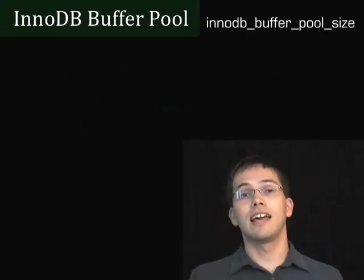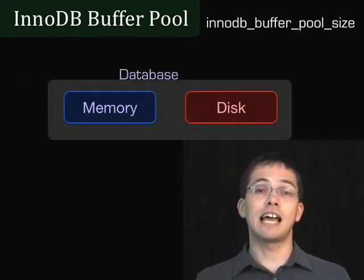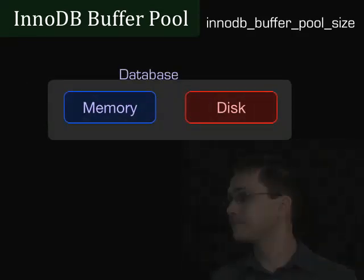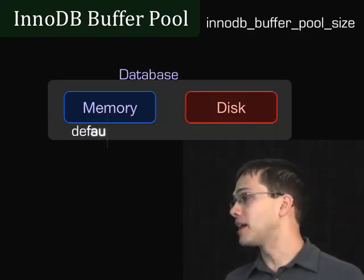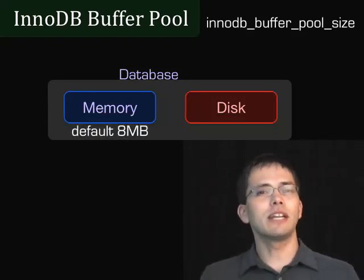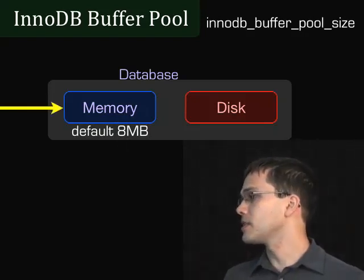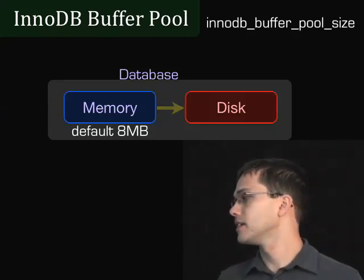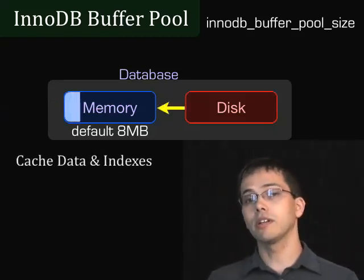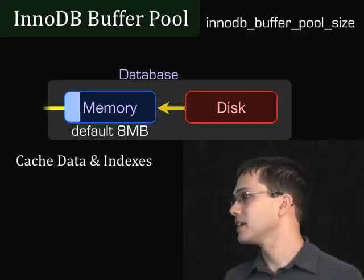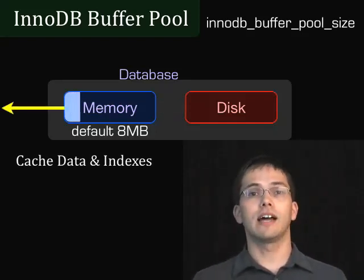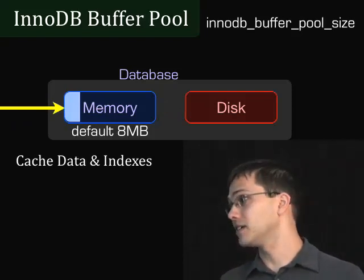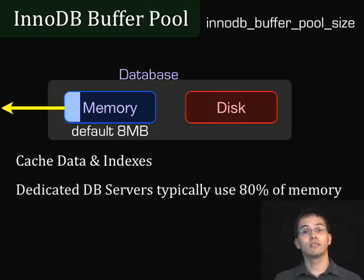One of the configuration options for InnoDB is the InnoDB buffer pool size. This specifies how much memory your database can use as a buffer. By default, InnoDB only uses 8 megabytes of memory. When a request comes in, it goes through to the disk, does the SQL query on disk, the data gets returned and stored in memory — cached in the buffer — and sent back to the user. Now if that same query is sent accessing the same data, it's not going to hit the disk at all, which is really good. It's going to be a lot faster if things stay in memory.